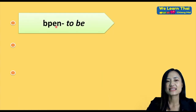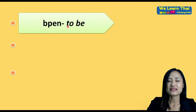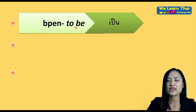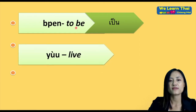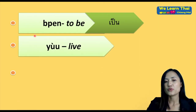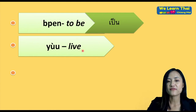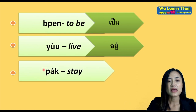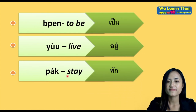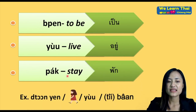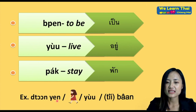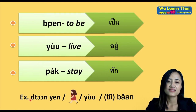The word 'ben' means to be, to be something. 'Yu' means to live or to stay, for short term. For example: in the evening, I'm at home.